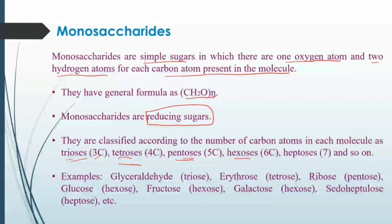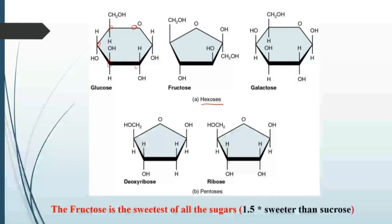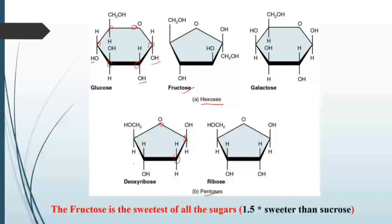Examples of monosaccharides include glyceraldehyde (triose, three carbons), erythrose, ribose, glucose, fructose, and galactose. Looking at the structures, glucose, fructose, and galactose come under hexose — six carbons (one through six) — with hydroxyl functional groups. Glucose and galactose fall under the aldehyde group, whereas fructose comes under the ketone group. Ribose and xylose are pentoses based on five carbons.